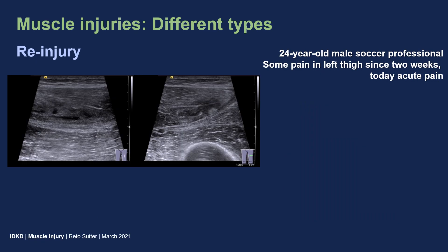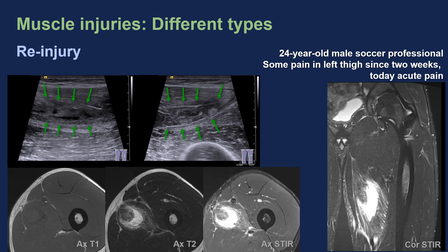A common injury in professional athletes is re-injury, such as in this 24-year-old soccer pro. He had a muscle tear two weeks ago and rejoined soccer practice too early after insufficient recovery. He presented with acute pain after indirect trauma, with re-injury at the same location. At ultrasound, we can see an intramuscular tear of the adductor longus with a large hematoma, which was then followed up by MRI.